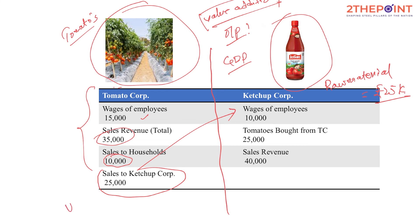To find the value addition of the tomato corporation: the final value of output is 35,000 rupees. The wages of employees are part of production cost, not intermediate input cost. The input cost in this example is zero, so the value addition by the tomato corporation is 35,000 rupees.